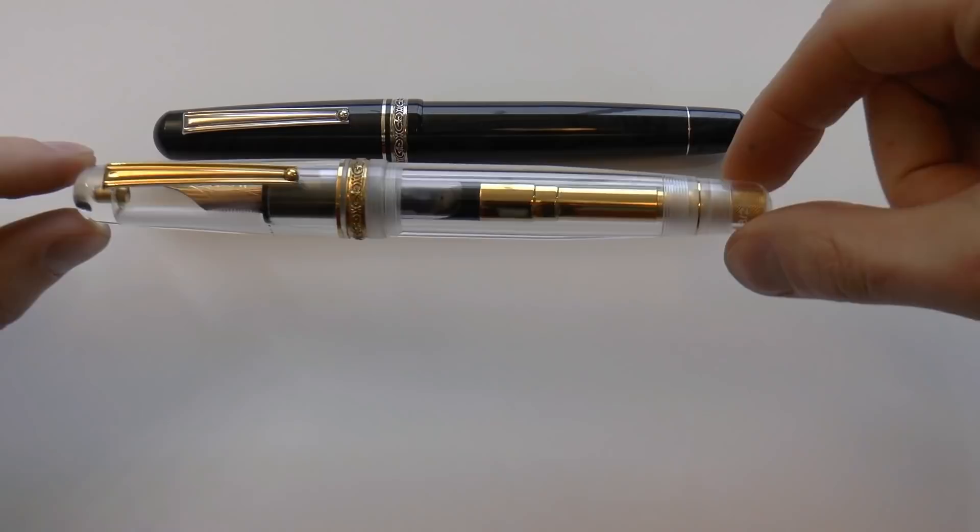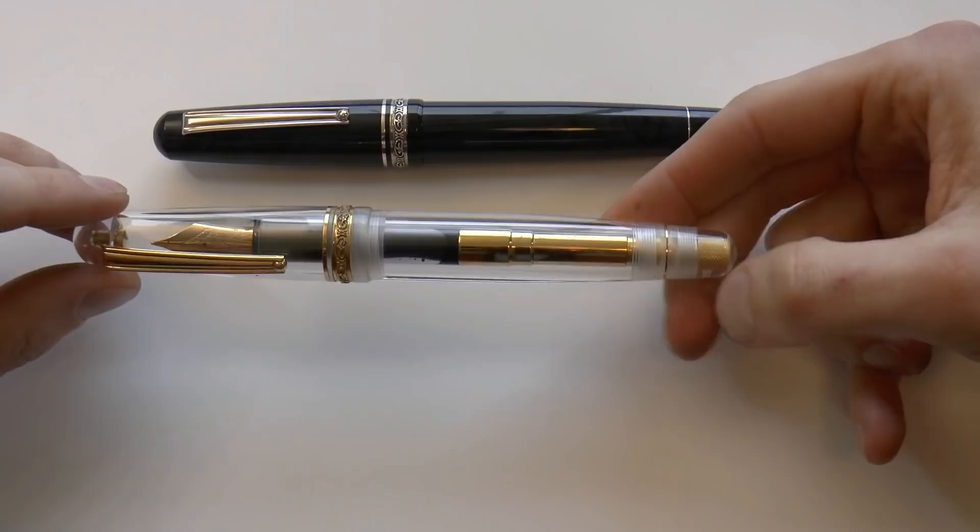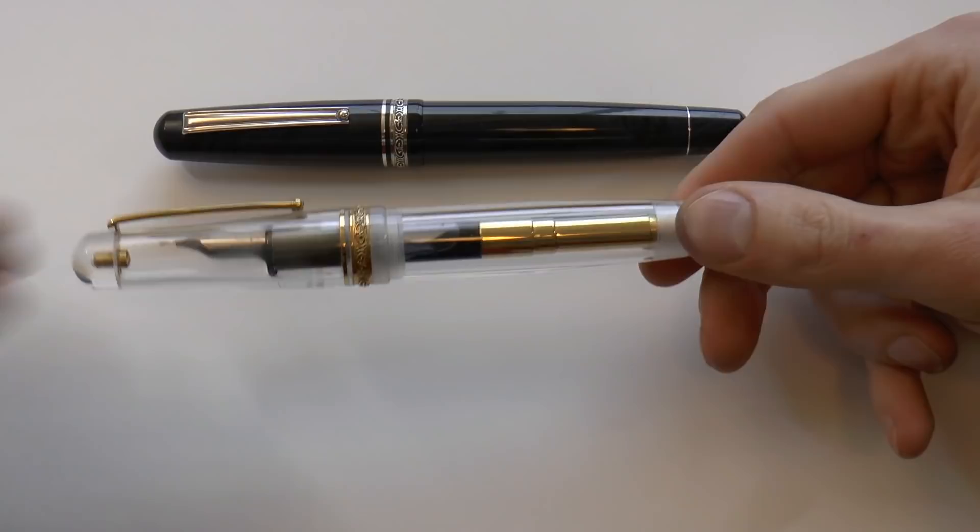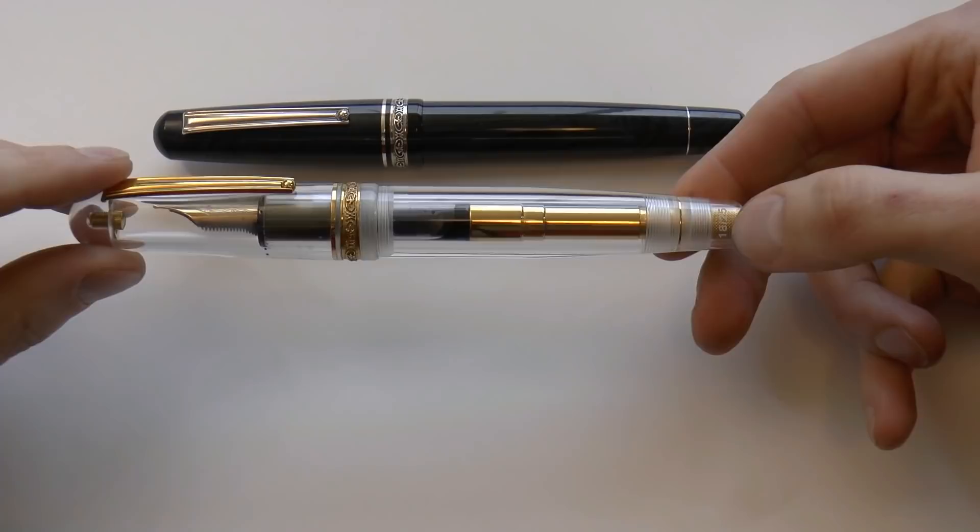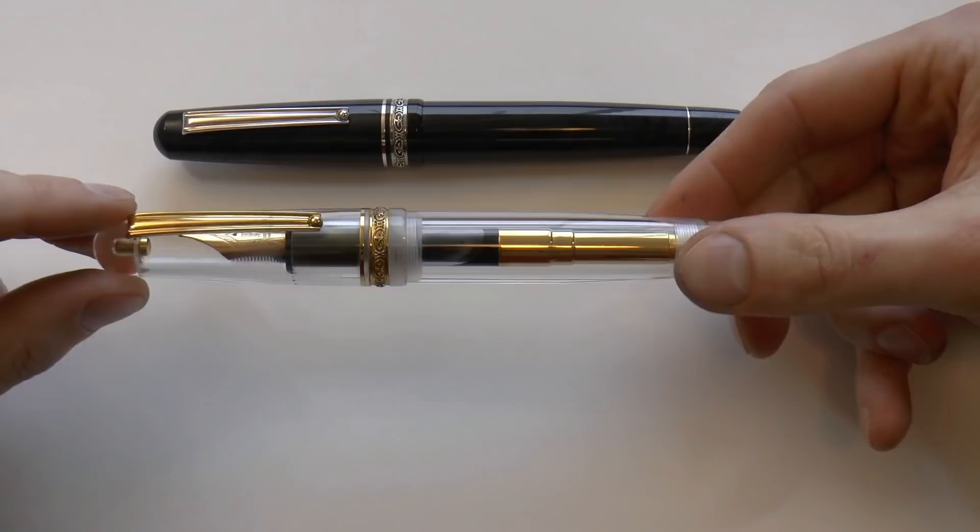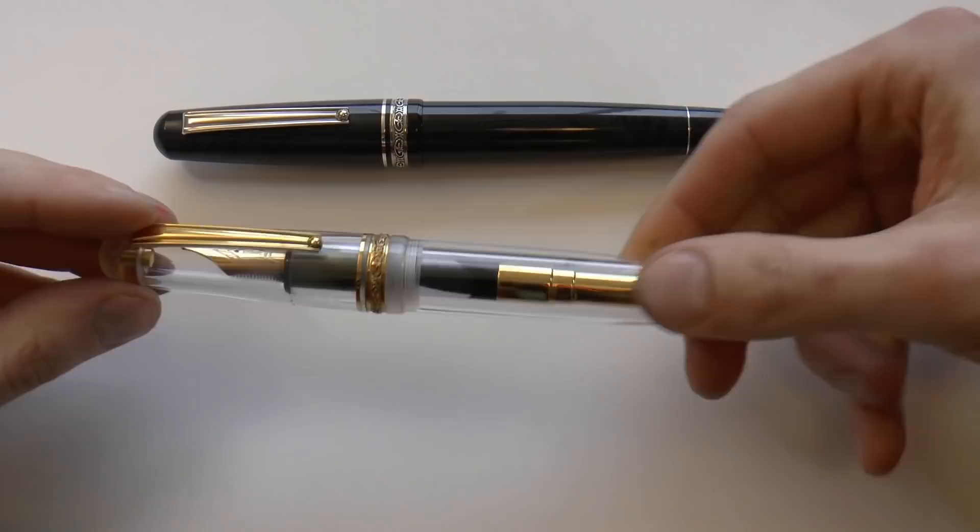This one, as I said, my own pen I have done a full review on, so you can watch that if you want. But in a nutshell, this specific finish is exclusive to Airline International. I think there were $1,350 when they were launched initially. 25 made in this demonstrator version, this transparent version. And this one clearly has gold trim. It is a piston filled pen. It has a number eight nib and an ebonite feed. And that's pretty much it.